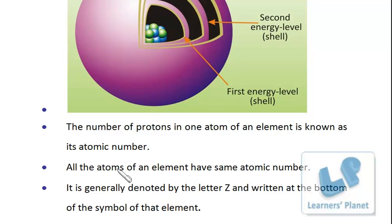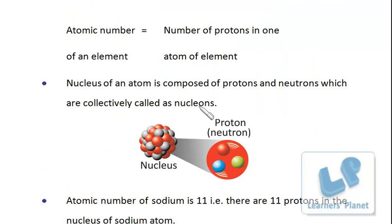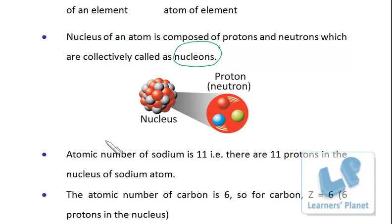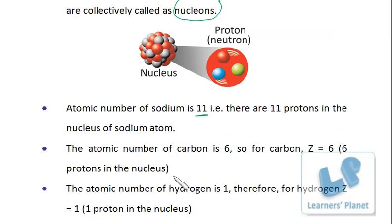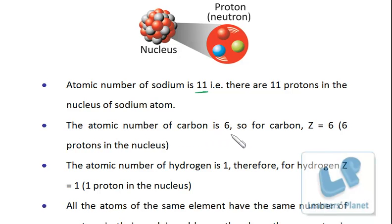The atomic number is generally denoted by the letter Z and written at the bottom of the symbol of the element. The nucleus of an atom is composed of protons and neutrons, which are collectively called nucleons. Atomic number, as already discussed, is the number of protons. For example, the atomic number of sodium is 11, meaning there are 11 protons in the nucleus of the sodium atom, and therefore 11 electrons. The atomic number of carbon is 6, meaning there are 6 protons in its nucleus.